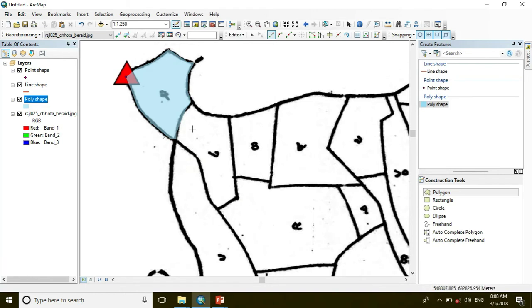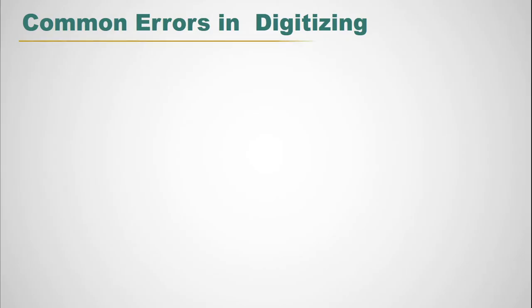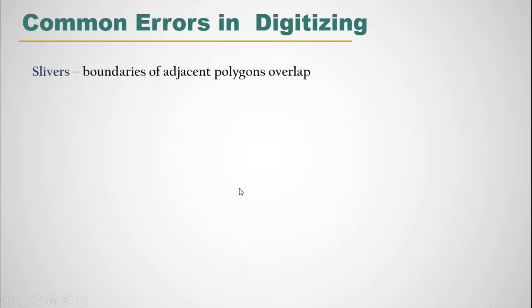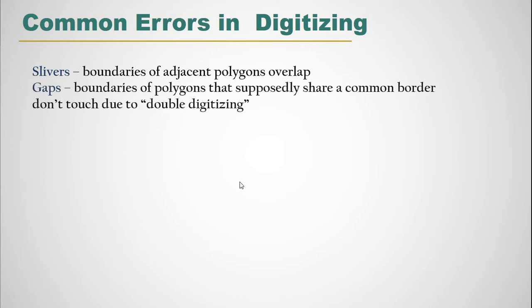Now I will show some basics of digitizing errors and the process of how to recover the errors at the time of digitizing. Common errors in digitizing: one is Slivers — slivers is where boundaries of adjacent polygons overlap, so we have to remove it at the time of digitizing. Then another digitizing error is Gap — boundaries of polygons that supposedly share a common border don't touch due to double digitizing. And another is Attribute Error — attribute data entered incorrectly.